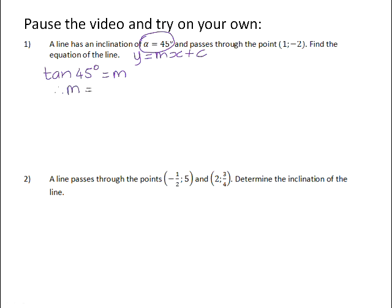So if you punch tan 45 into your calculator, you get your gradient to be positive 1. So your equation will be 1x + c. In order to solve for c, we can now use the second piece of information we were given, which was the coordinate (1, -2).